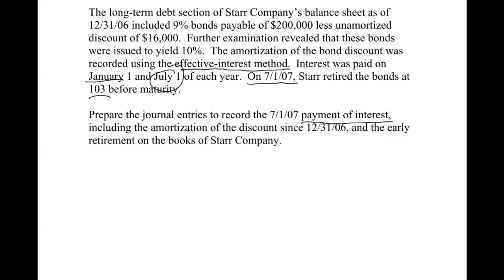It says to prepare the journal entries to record the July 1st payment of interest, including the amortization of the discount, and then the early retirement of the debt. Let's take this into two parts. First, July 1st, 2007 — it wants the journal entry for the interest, because we're going to have to pay that interest up to that point. So before we even think about the numbers, let's remember: if the bonds were issued at a discount, the journal entry for paying interest and recording interest expense is going to look like this. The cash is the interest payment where we use the stated rate. We have $200,000 worth of bonds payable and a 9% rate.